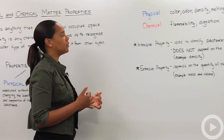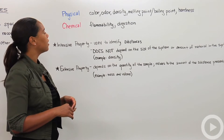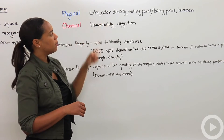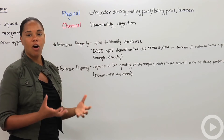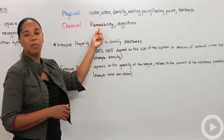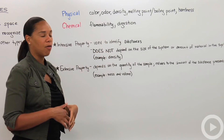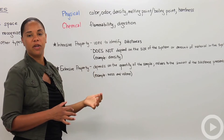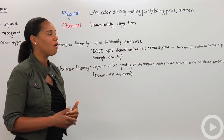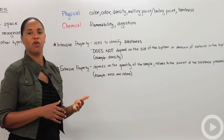Let's discuss some types of physical and chemical properties. Physical properties are things like color, odor, density, melting and boiling point, and hardness — especially if you're talking about a metal. A chemical property is something like flammability and digestion. When you eat food and it digests in your stomach — the change from a food being solid to you chewing it and it becoming digestible — that is a chemical property of matter.